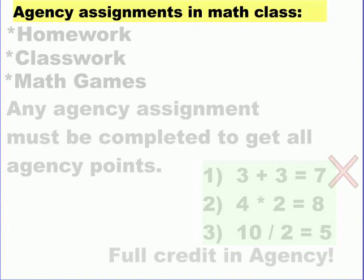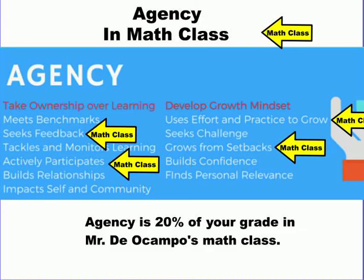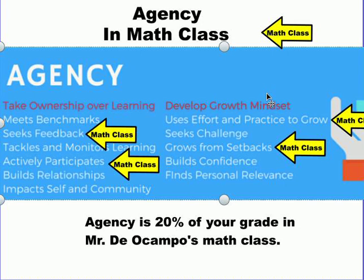Math class is not the only place where agency is important. In fact, when you become older, many times you will be asked to take more ownership over your own learning, and you will be asked to develop a growth mindset, especially when the work gets hard or challenging.